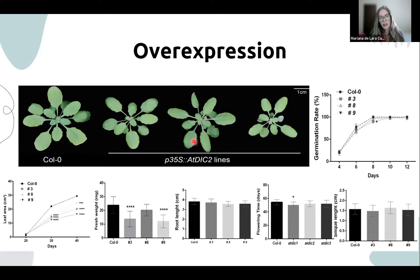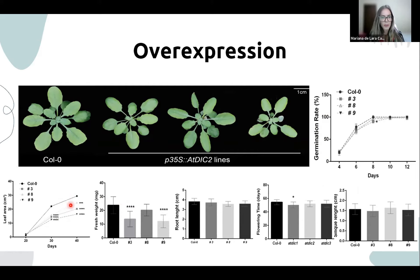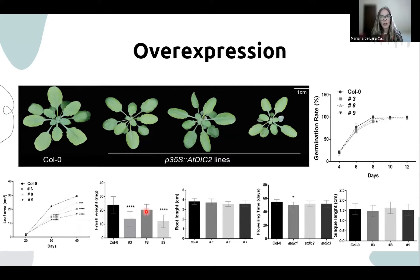The overexpression lines were analyzed to evaluate the opposite situation, and the opposite is indeed true. No changes were verified in germination rates, but in leaf area and biomass accumulation, the opposite of what was observed in the knockout lines was seen — a decrease in leaf area and biomass accumulation. Both phenotypes are in line with each other, so the analysis will be more focused on the tDNA insertion lines.